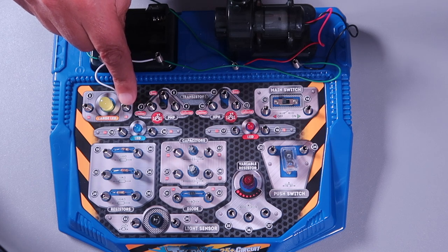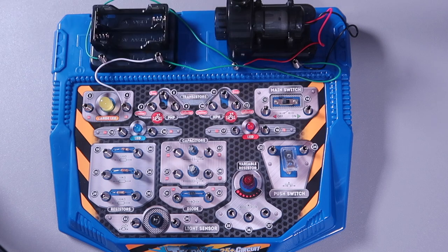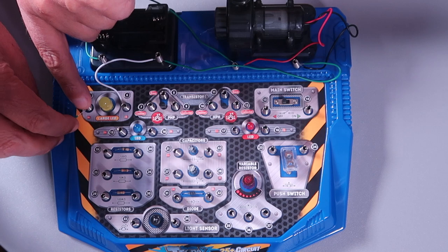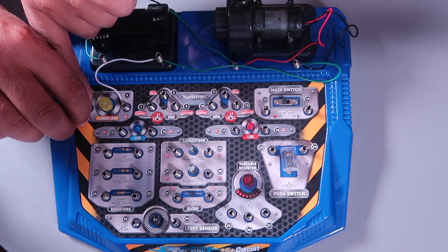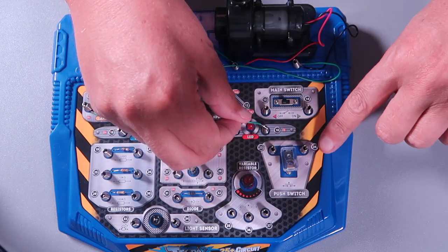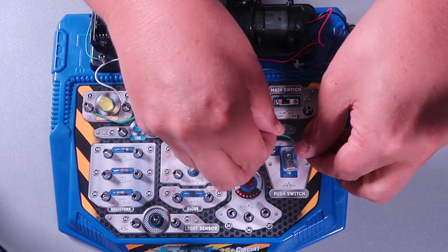And for example, now I need to connect 5 to 24. So here's 5 over here, and that has to go all the way across the board to 24 over here.